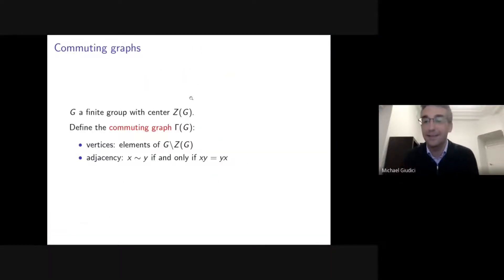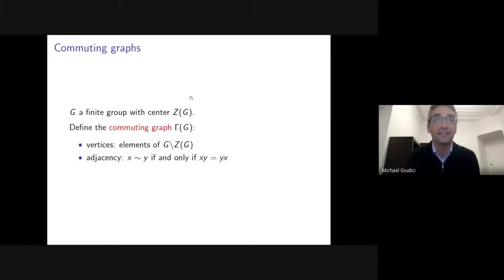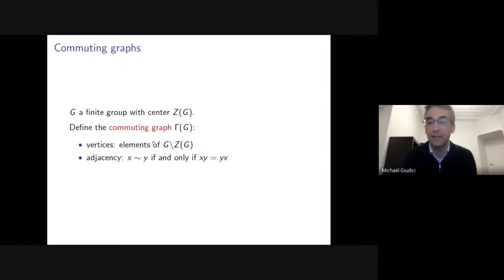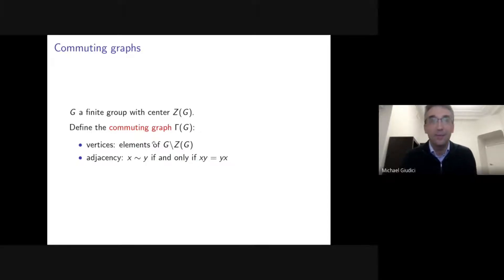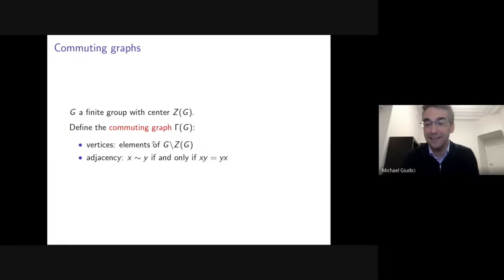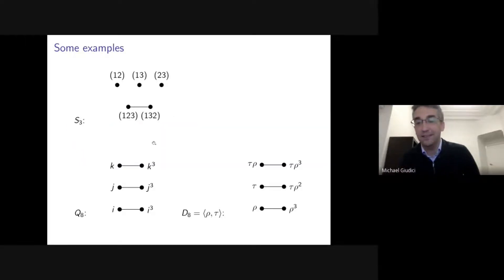So what is a commuting graph? I have a finite group G, I look at its center, and the commuting graph is the graph for which the vertices are the non-central elements of G — so all elements not in the center — and two vertices are adjacent precisely when they commute. In some papers the central elements are included, but I exclude them because they're uninteresting: they're connected to everything.